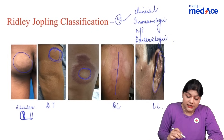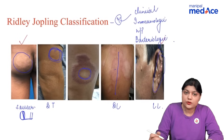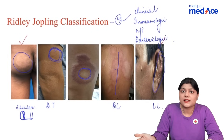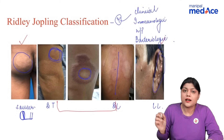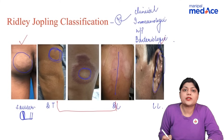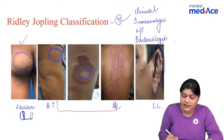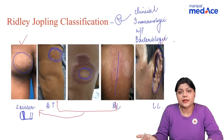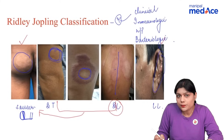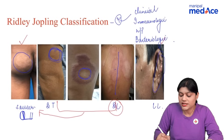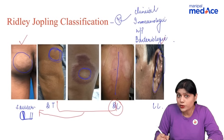The tubercoloid and lepromatous poles are stable forms, whereas the three borderline types are unstable. Due to treatment or increased immunity, the borderline types can undergo reversal reaction leading to Type 1 lepra reaction. Borderline lepromatous and the subpolar form of lepromatous leprosy can progress to Type 2, erythema nodosum leprosum reaction.